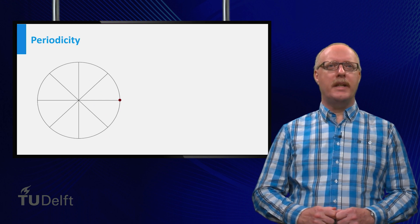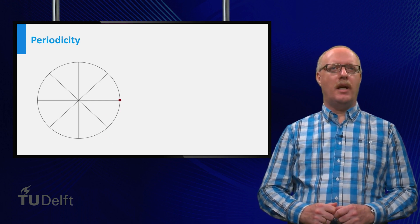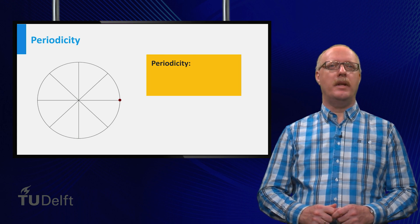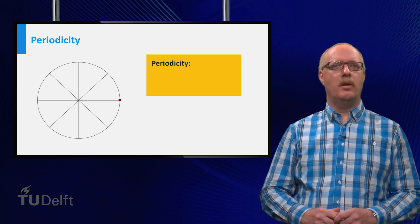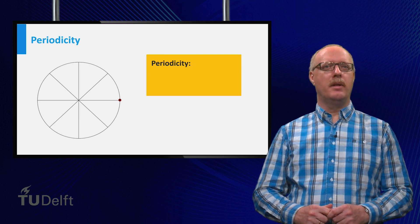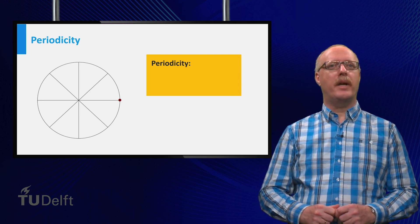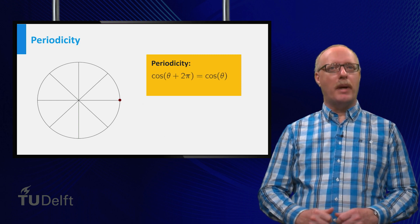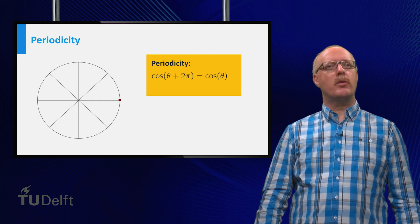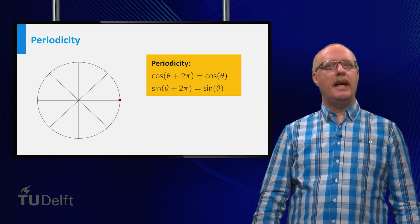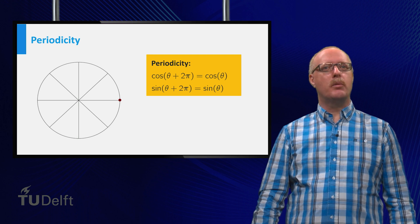From the unit circle it is clear that both the cosine and the sine are periodic functions. In fact, if we make a complete turn counter-clockwise, which is the positive direction, we run through the same values of the angle theta again. This implies that the cosine of theta plus 2pi equals the cosine of theta, and that the sine of theta plus 2pi equals the sine of theta.